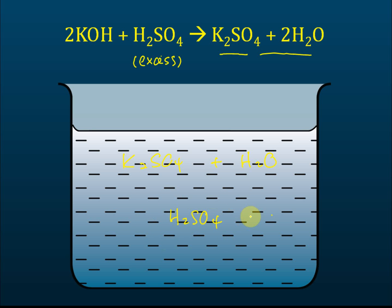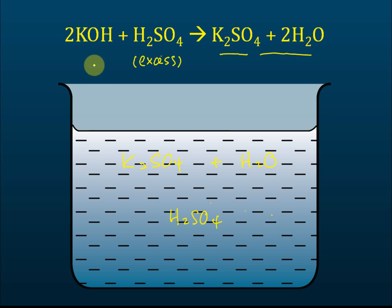When preparing a salt, we must consider what the impurities in the products are and how to remove them. The answer here is that we cannot remove sulfuric acid from the potassium sulfate solution, because both are solutions. It is very hard to separate one solution from another solution.